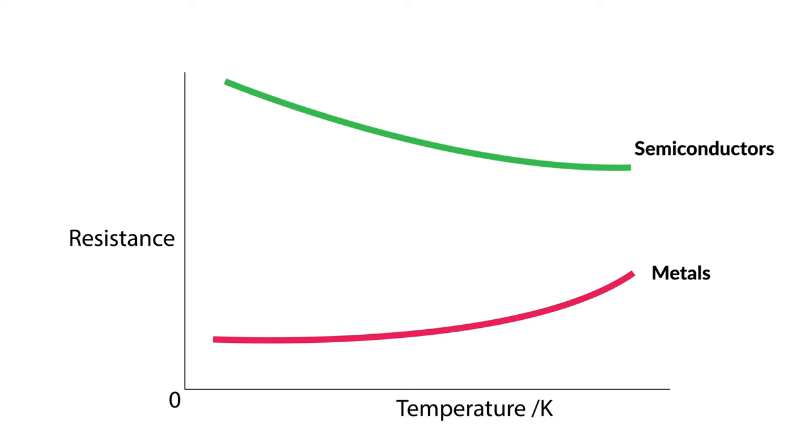Here is where superconductors come in. Above a certain temperature, they behave like normal metals. Below it, however, they have little to zero resistance.